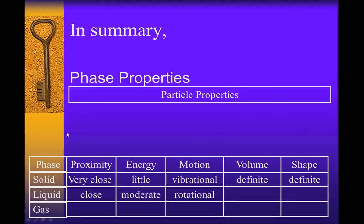Gas—the proximity, far apart. It has a lot of energy, that's why it's trying to get away from each other. The motion, fancy term here called translational, trying to get away. The volume is indefinite because it can spread out according to temperature, and its shape is indefinite as well.